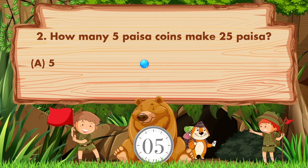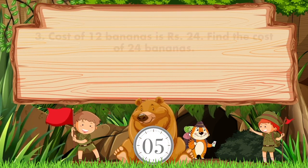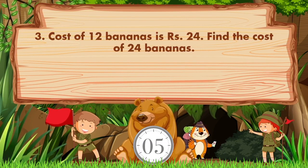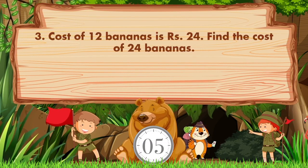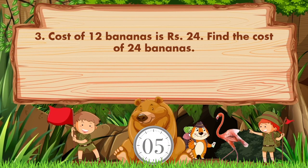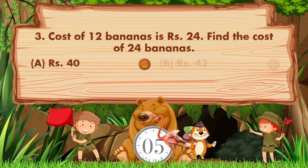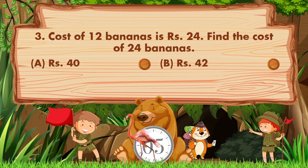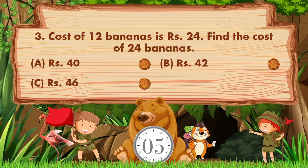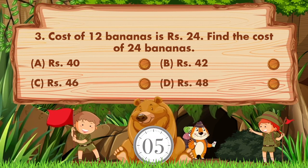The answer is option a: 5. Cost of 12 bananas is 24 rupees. Find the cost of 24 bananas. Option a is 40 rupees, option b is 42 rupees, option c is 46 rupees, option d is 48 rupees.